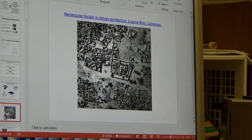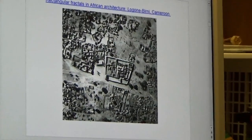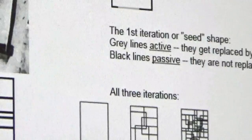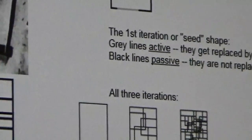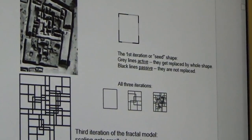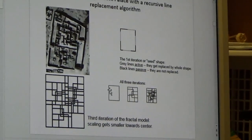One day I happened to be looking at an aerial photograph of some traditional African villages and I noticed that they look like fractals. This particular one is in rectangles — you can see it's rectangles within rectangles within rectangles. If we zoom down into that central building, which is the palace of the chief, you can see those rectangles continue to very small scales. I used software to do the same thing George Cantor did 150 years ago: start with a seed shape, replace parts with itself, and we end up with something that looks pretty much like that shape.